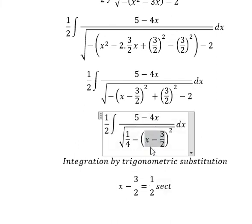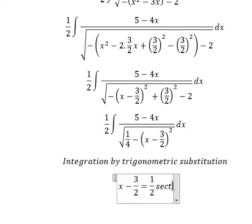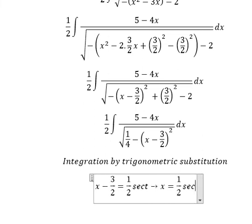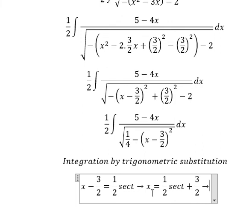We can do factorization with 1 over 4. One minus secant of t squared we change to tangent squared, and then we simplify by dx. We still have x in here, so we put negative 3 over 2 to the right.